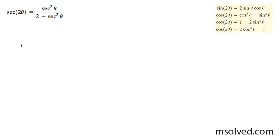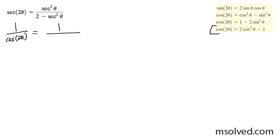We're going to prove the left side is equal to the right side through trig identities. I can rewrite the double angle of the secant simply as 1 over cosine 2 theta. There's some tricks and trial and error here, but what you're going to end up wanting to use is this identity: the double angle of the cosine is equal to 2 cosine squared theta minus 1. It's a cosine, not the secant.